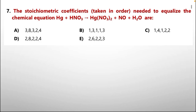Question number 7: the stoichiometric coefficients taken in order needed to equalize the chemical equation — mercury plus hydrogen nitrate gives hydromercury nitrate plus nitric oxide and water. Options A through E are the coefficients in order and we need to find the correct option which will equalize the reaction.